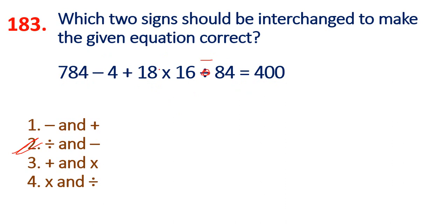We have to interchange the minus and division signs. After cancellation, this is approximately 200. So the approximate value is 300.